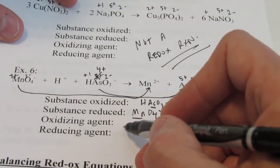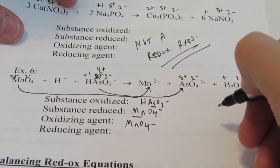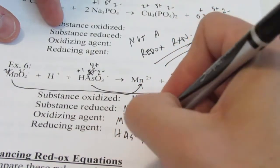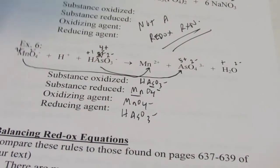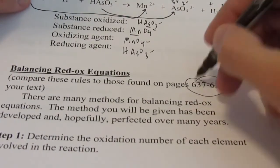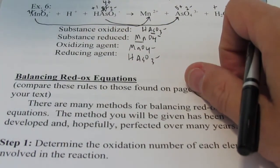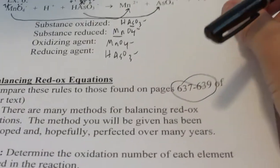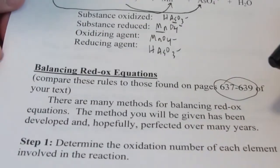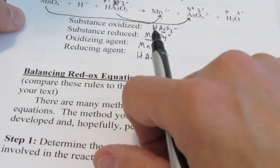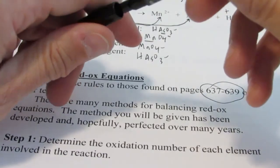The oxidizing agent contains the element that was reduced, so MnO4⁻ is the oxidizing agent. The reducing agent contains the element that was oxidized, so HAsO3⁻ is the reducing agent. When we come back, we're going to learn how to balance redox reactions. The textbook uses the half-reaction method, but I prefer a different approach that I think is a lot easier. We'll go through the steps at the beginning of the next video and work through examples — it'll be very helpful if you're taking AP Chemistry or any other chemistry course. Talk to you folks later.